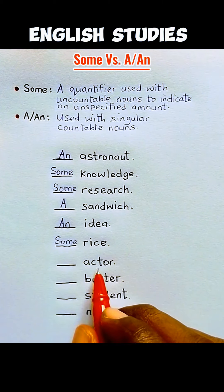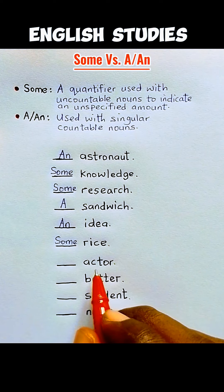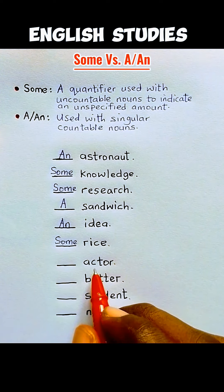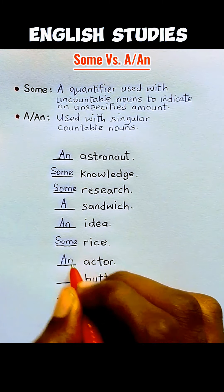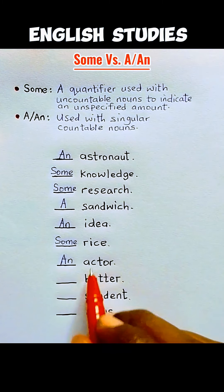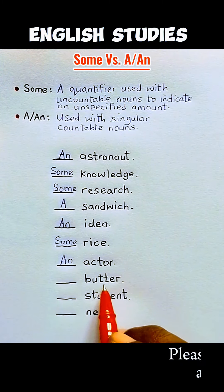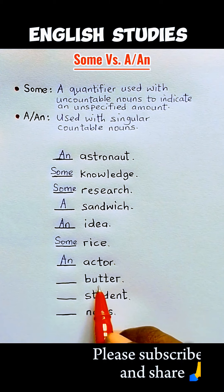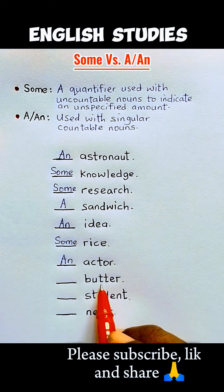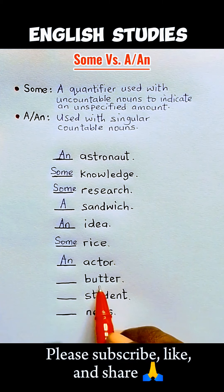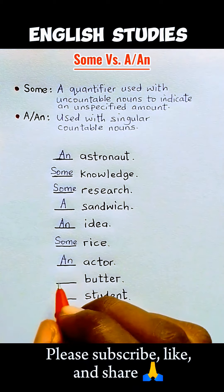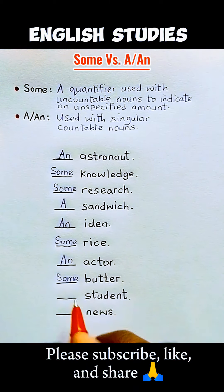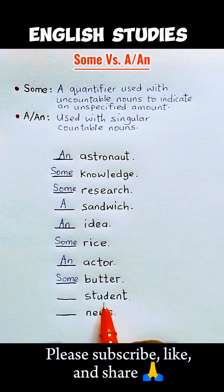'Actor' is a countable noun and it begins with a vowel sound, therefore we use 'an' — an actor. 'Butter' is uncountable, so to quantify it we use 'some' — some butter.